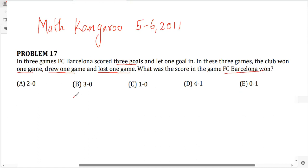So basically they played three games. They played game 1, game 2 and game 3. This is Barcelona and let's just say this is another team which is A, B, C.